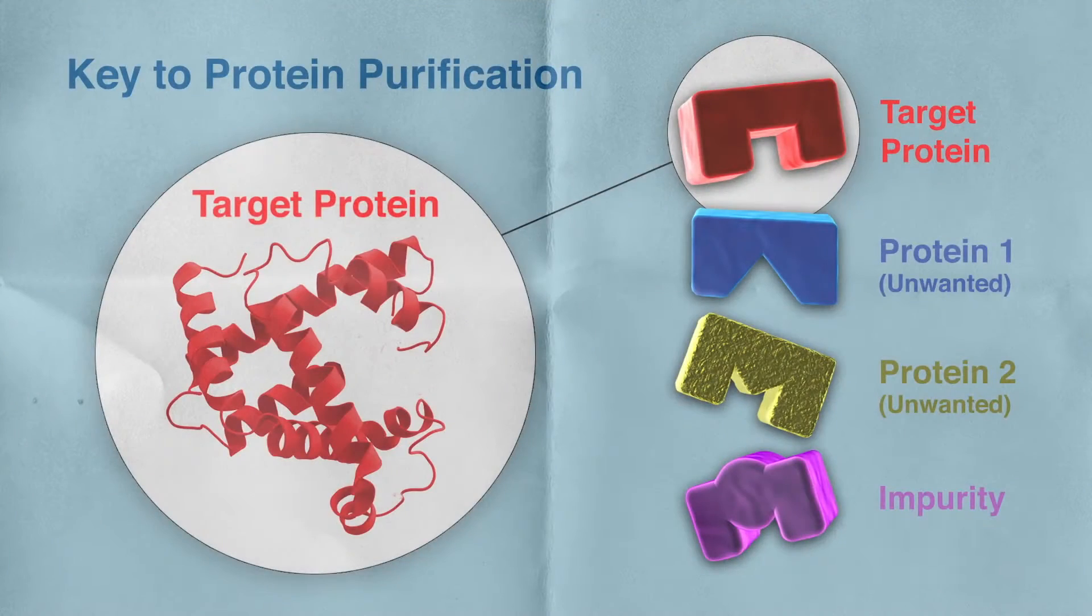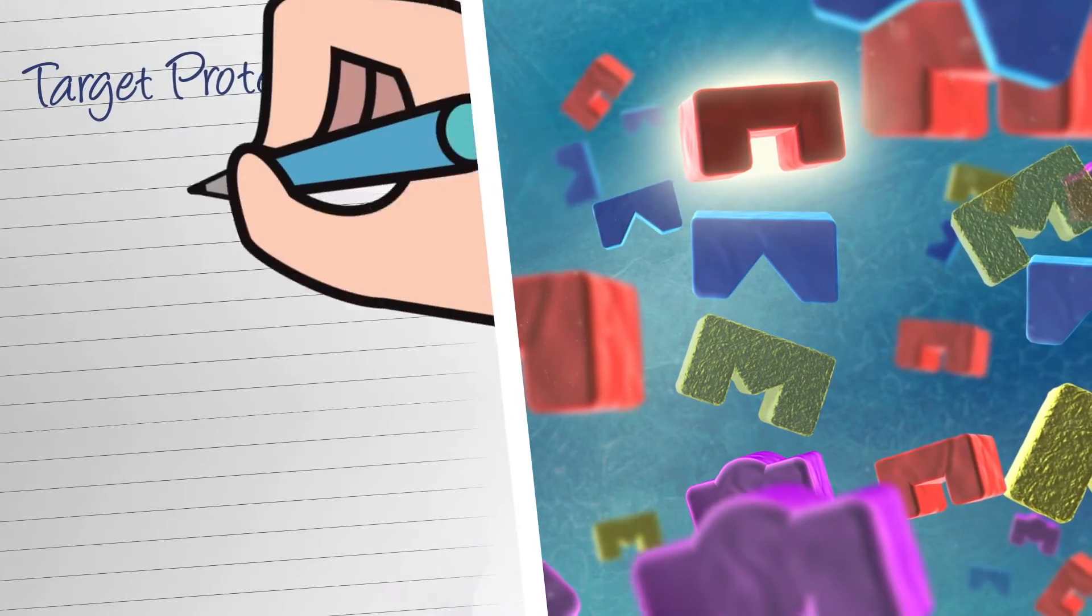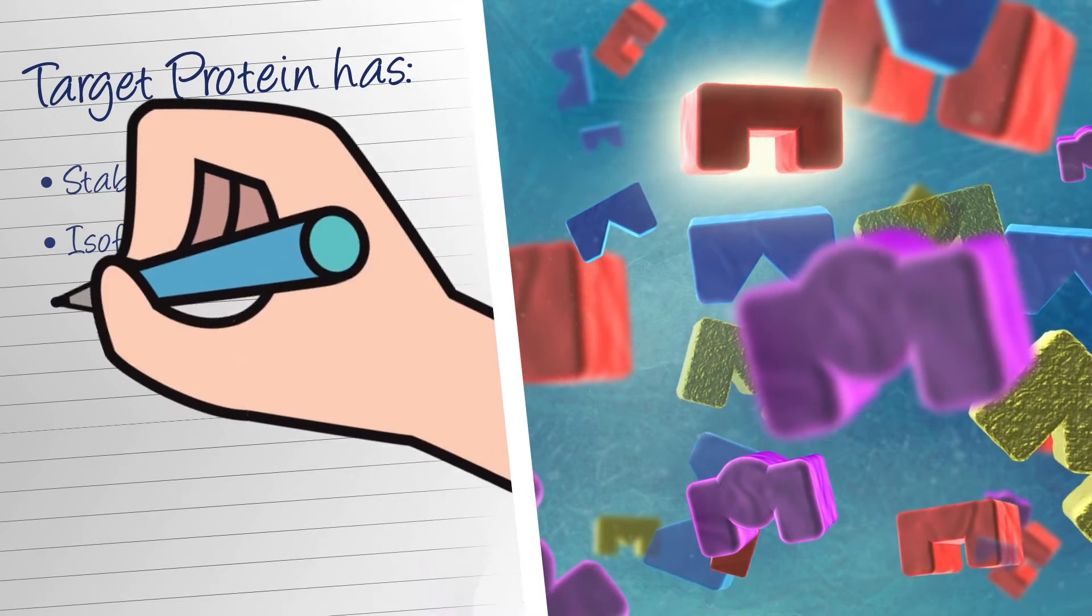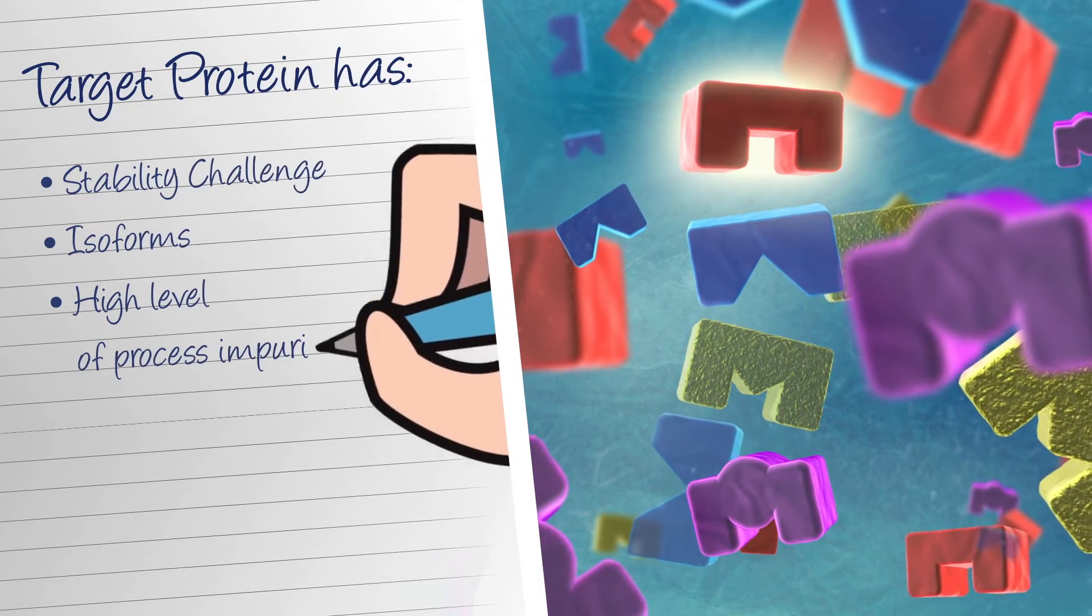Protein purification can be especially difficult for Mike when the target protein is unstable during purification, has isoforms, or needs to be purified from a complex mixture containing a high level of process impurities.